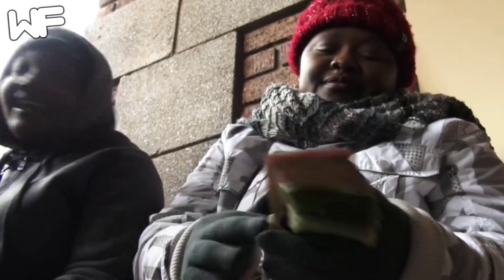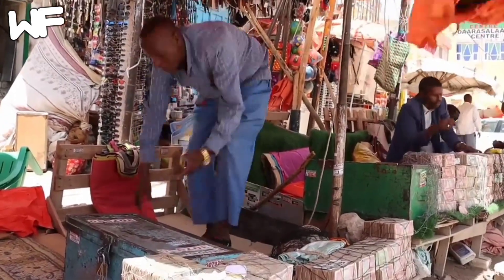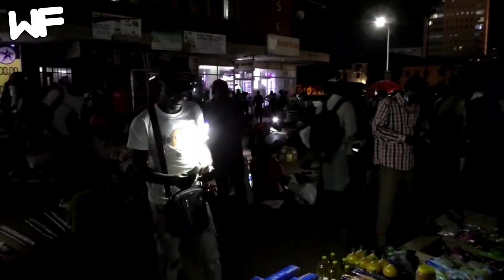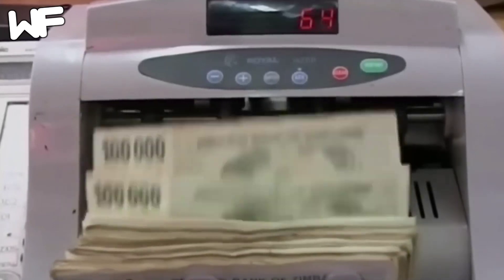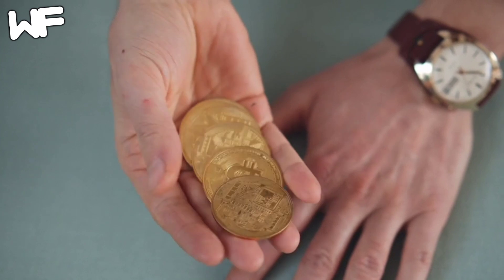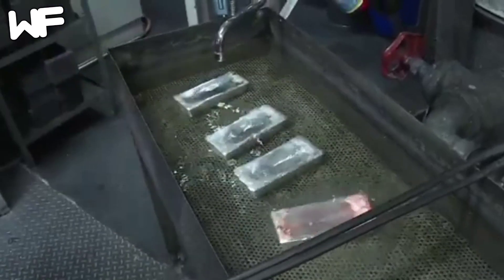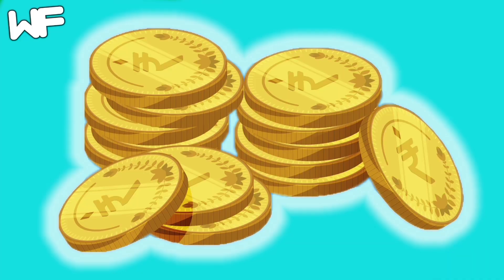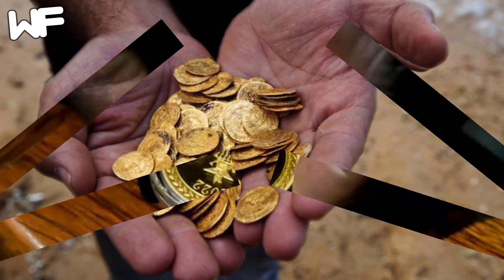Zimbabwe currently employs multiple currencies, the majority of which are U.S. dollars. The Zimbabwean dollar has been reintroduced despite currency production having ceased in 2009. Now, in an endeavor to improve the economy, the government has issued a number of policies, including using gold coins for local transactions. In an attempt to prevent currency devaluation, the central bank of Zimbabwe issued gold medallions as legal tender.